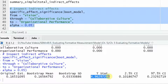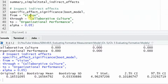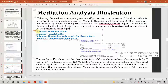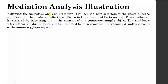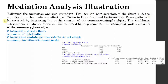It is greater than 1.96, and there is no zero in between. So we can say yes, collaborative culture mediates between vision and organizational performance. Now that we know that your indirect effect is significant, the next step is to identify whether the direct effects were significant or not in order to assess whether the mediation was complete or partial.